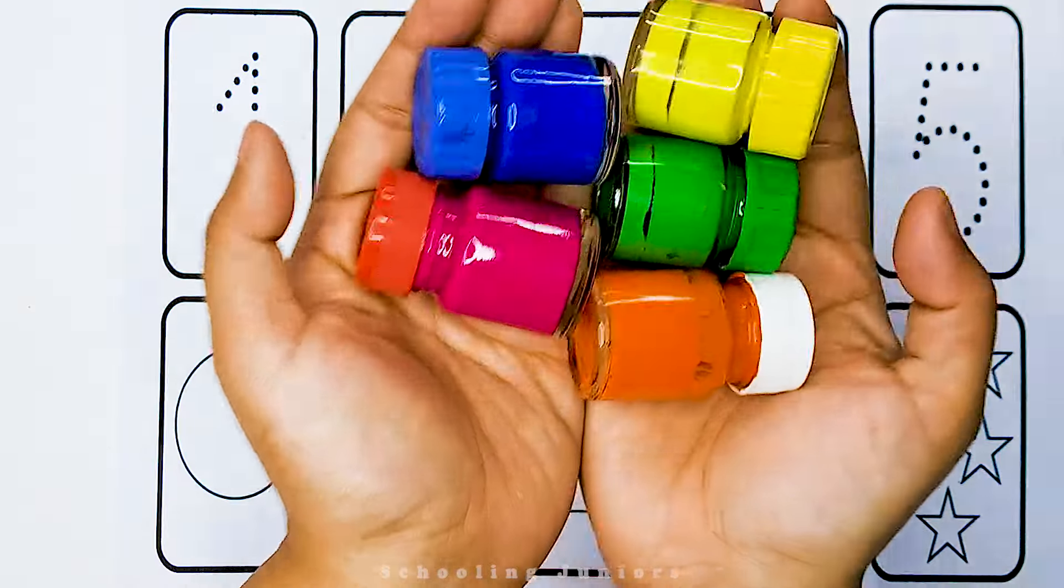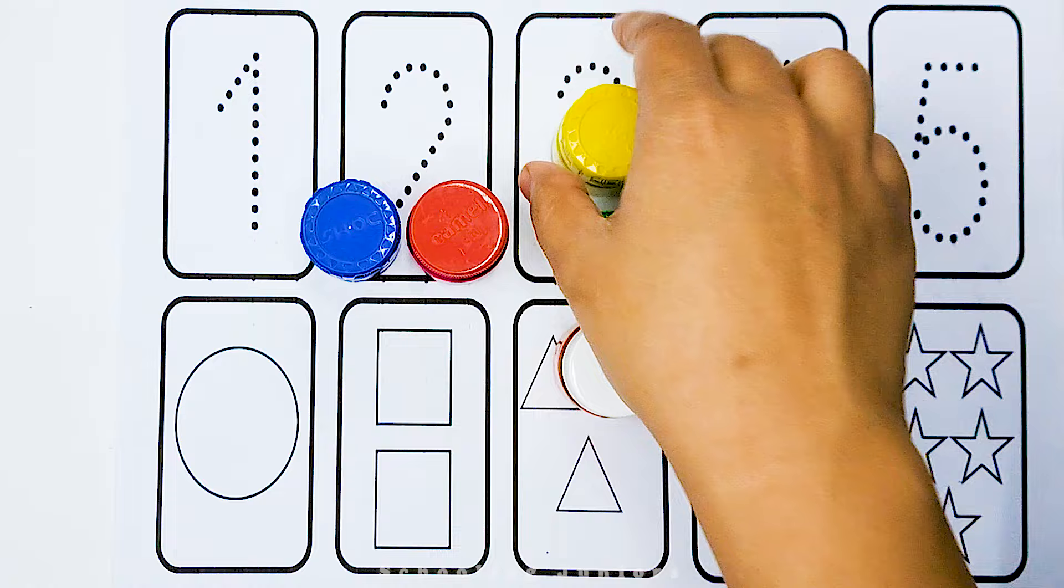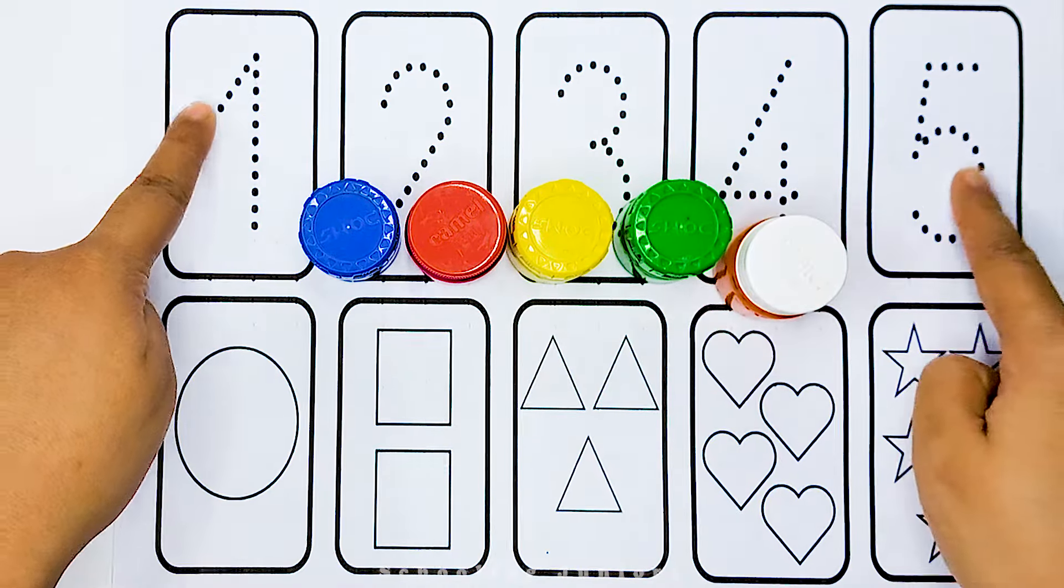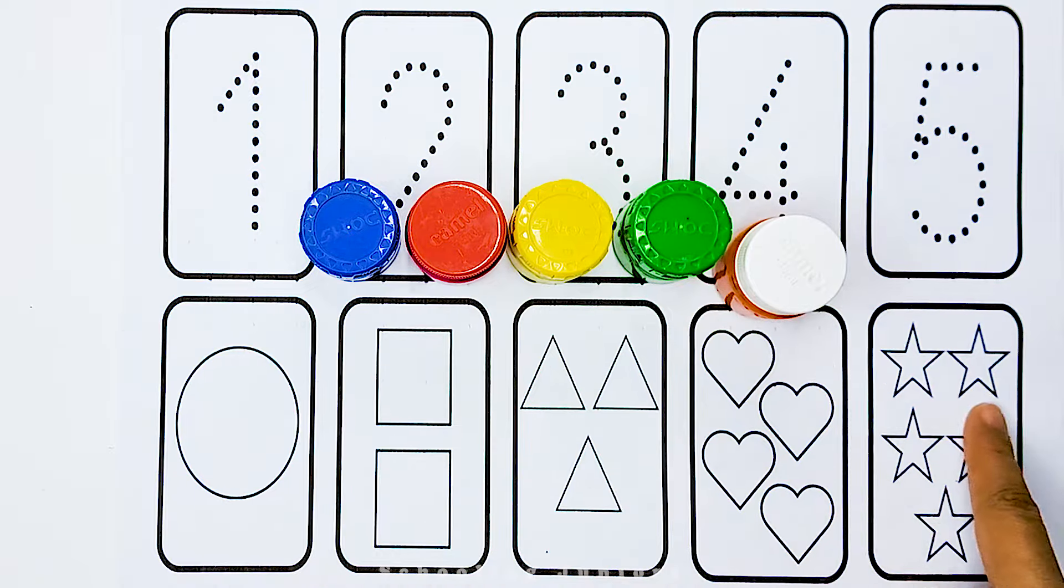How are you, little kids? Welcome to Schooling Juniors. Today we will learn 1 to 5 counting and 2D shapes name.